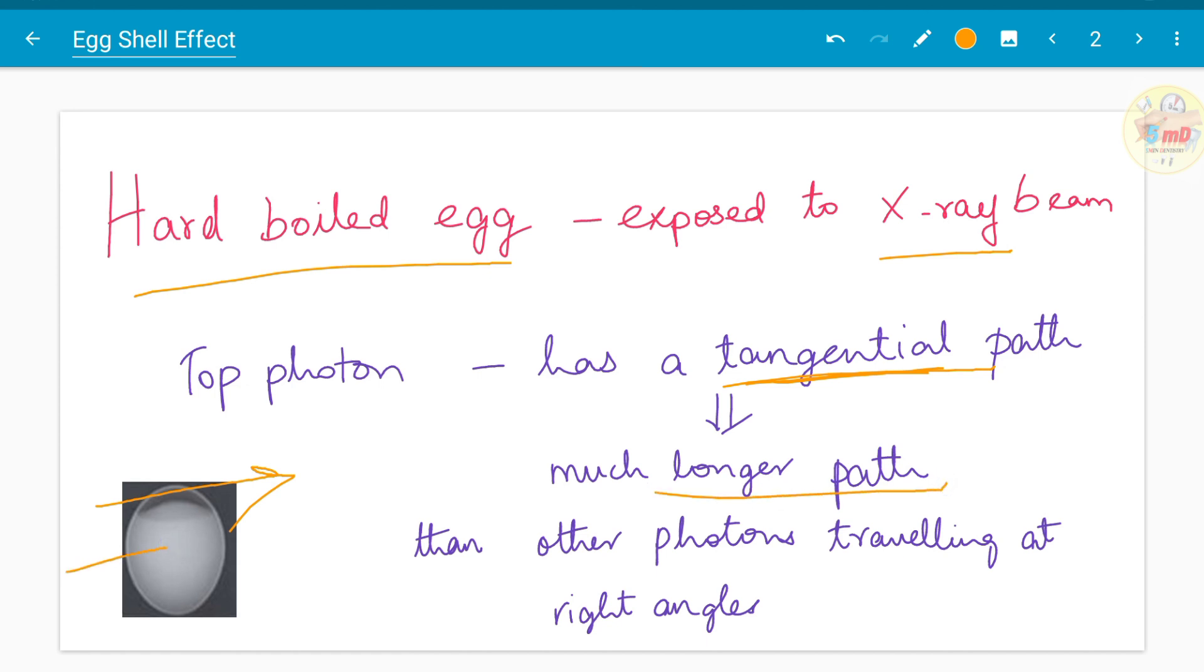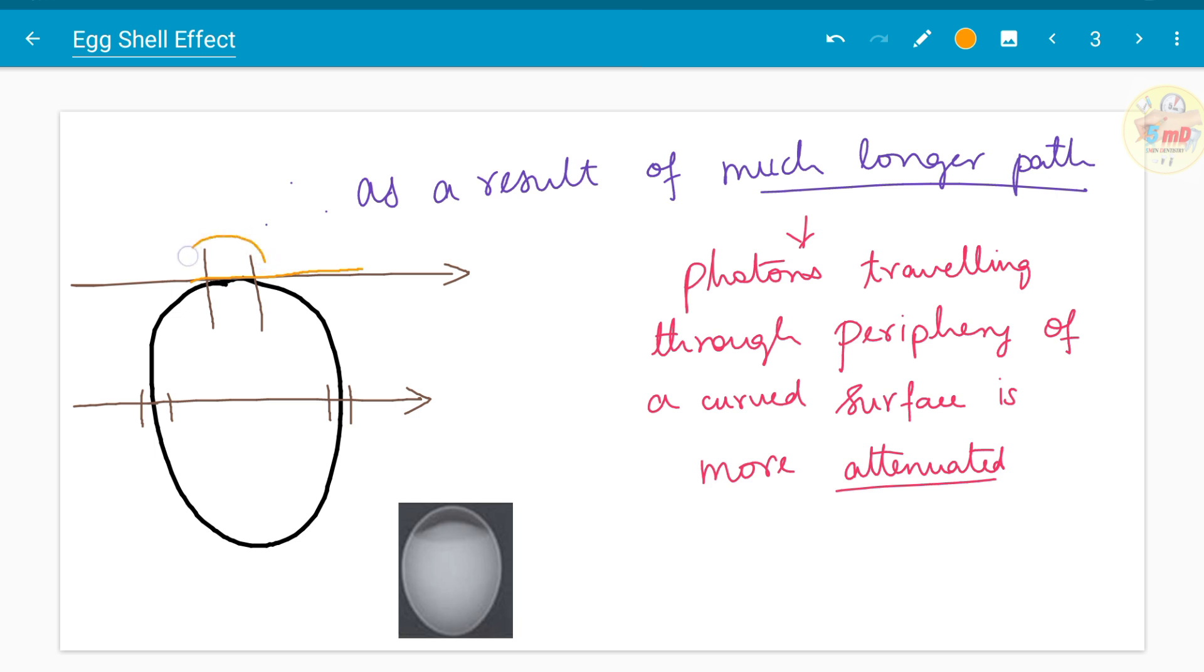As you can see in this picture, the tangent has a path this longer, whereas the beam which passes right through the egg travels only at this point through the shell.